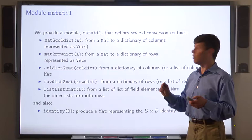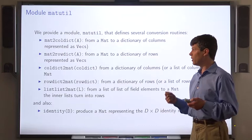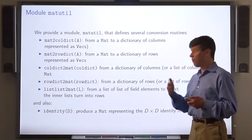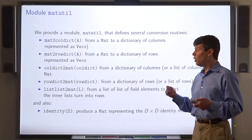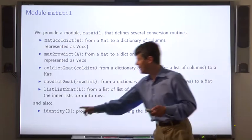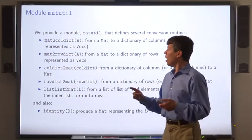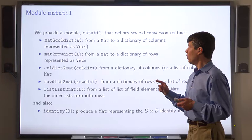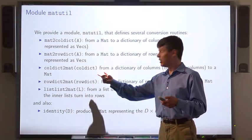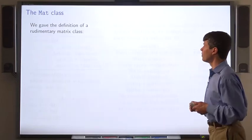Here's the solution. We provide a module, MATUTIL, that defines various conversion routines, such as MAT to CALDIC, MAT to ROWDIC, CALDIC to MAT, ROWDIC to MAT. And LIST to MAT that converts from a list of list of field elements to a matrix, such that the inner lists are the rows of that matrix. And also the identity procedure that you wrote. I should note that CALDIC to MAT and ROWDIC to MAT can take as arguments a column dictionary, or a row dictionary, or a list of columns, or a list of rows. So it's somewhat more flexible.